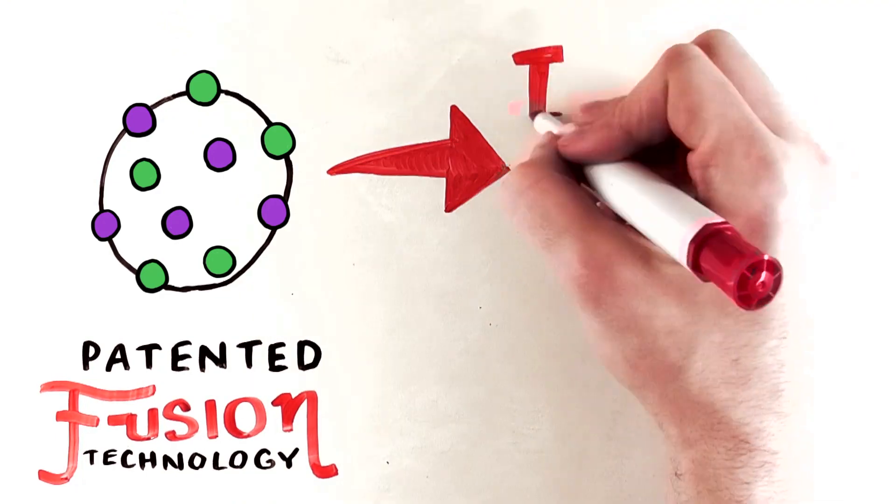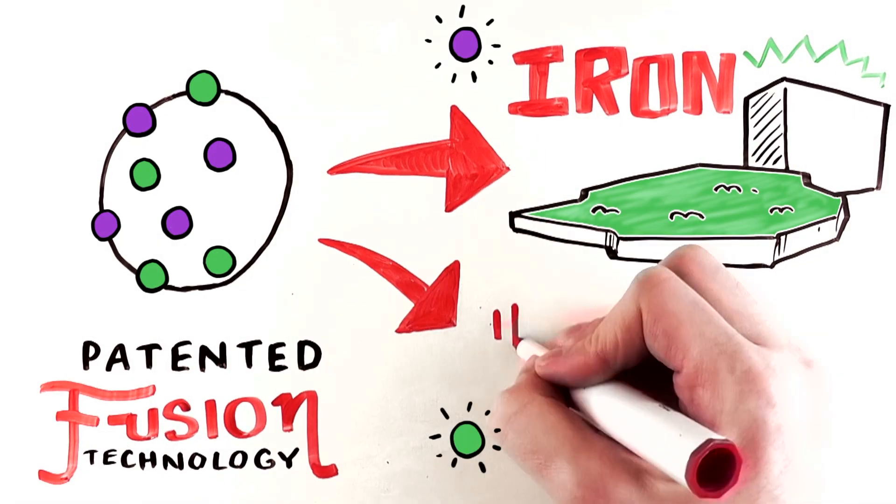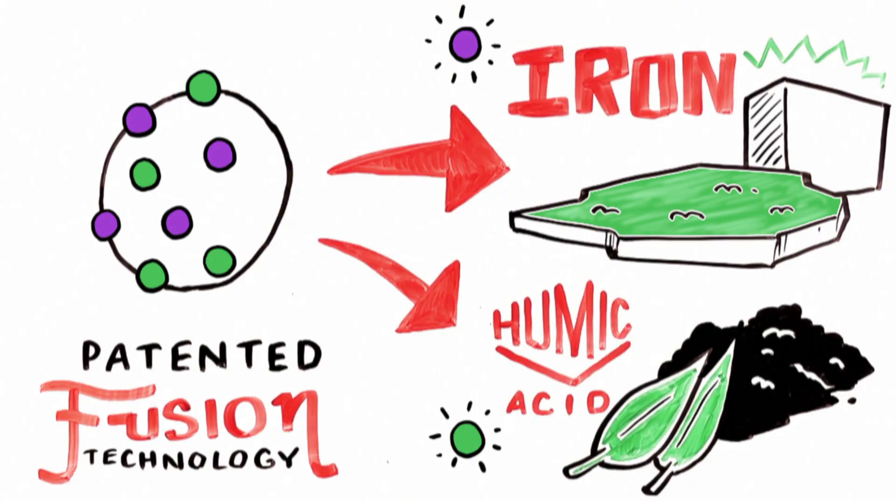Two ingredients that stand out. Iron, which adds a vibrant green color to your lawn. And humic, which is an organic matter found naturally in soil.